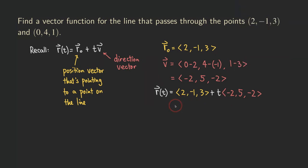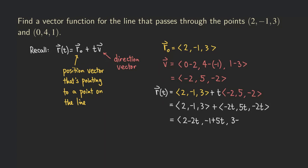Now we are basically done, but let's combine both vectors together. We have ⟨2, negative 1, 3⟩ plus, distributing T into all the components of the direction vector, we get ⟨negative 2t, 5t, negative 2t⟩. Adding the two vectors together gives us ⟨2 minus 2t, negative 1 plus 5t, 3 minus 2t⟩. Since we are talking about a line, there is no restriction on t — it goes from negative infinity to infinity.